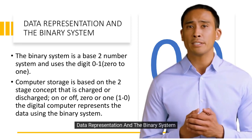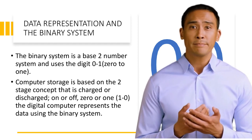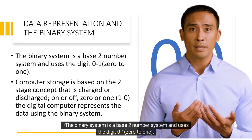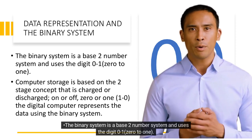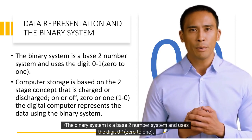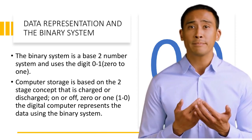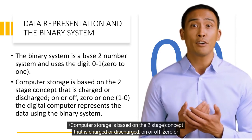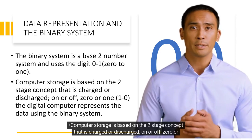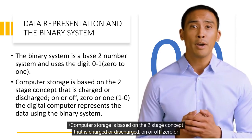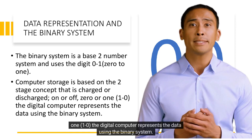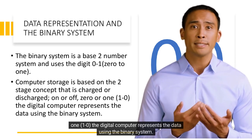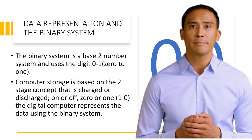Data representation and the binary system: the binary system is a base-2 number system and uses the digits 0 and 1. Computer storage is based on the two-state concept — that is, charged or discharged, on or off, 0 or 1. The digital computer represents data using the binary system.